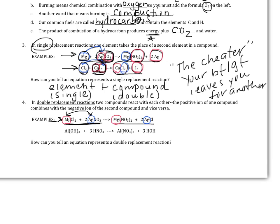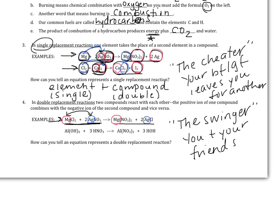While the single replacement was the cheater reaction, the double replacement is the swinger. You'll have to look up what a swinger is if you don't know — ask your dad. Basically, this is a scenario where you and your friend swap dates.